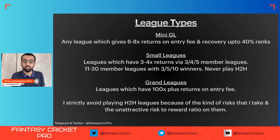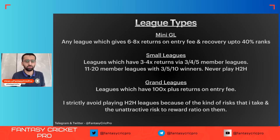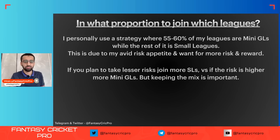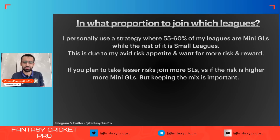For grand leagues with 100x-plus returns, we take a little more risk and some people even make multiple teams. Coming to division: if you are putting 100 rupees per game, I personally put at least 40 to 50 rupees in mini GLs, 30 to 40 in small leagues, and the remaining 10 to 15 in grand leagues. I strictly avoid head-to-head. My proportion stays at 55 to 60% in mini GLs and the rest in small leagues because I like taking more risk for higher reward.